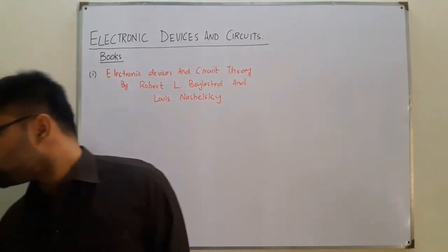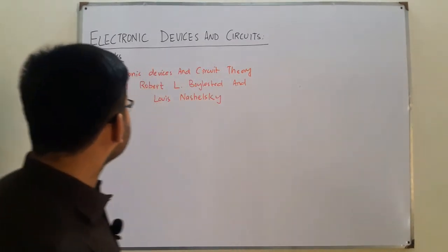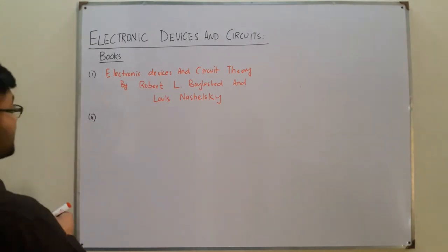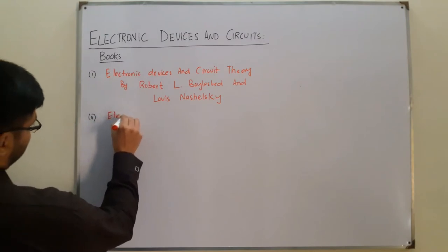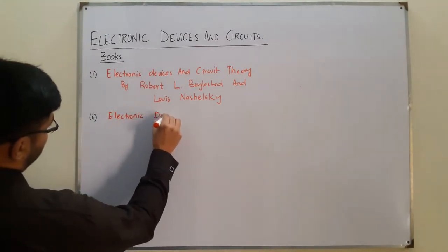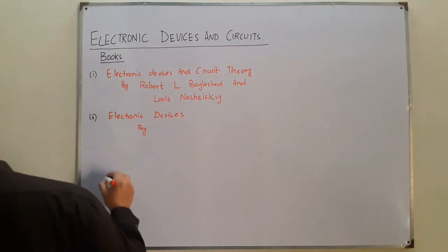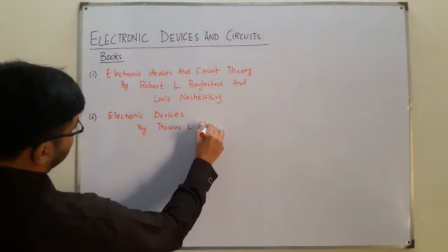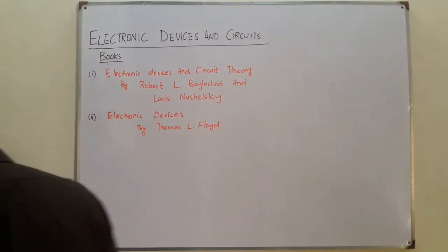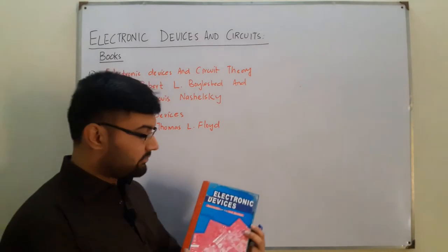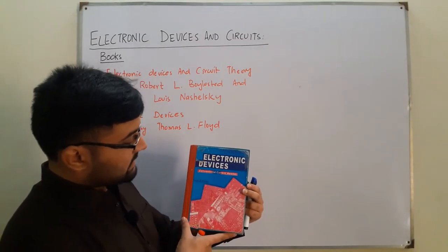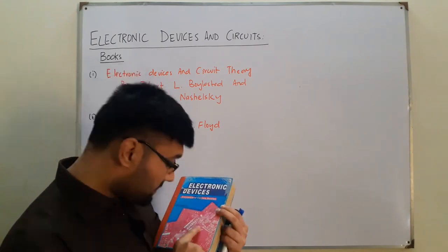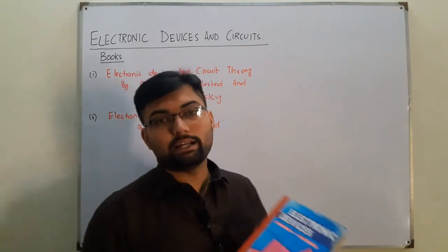The second book is Electronic Devices by Thomas L. Floyd. I also have a copy — this is the conventional current version by Thomas L. Floyd, and this is the ninth edition of the book.